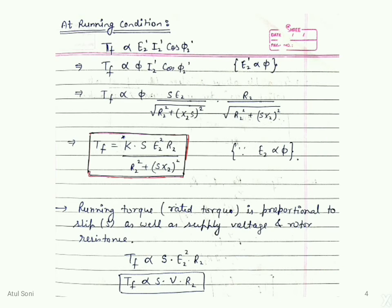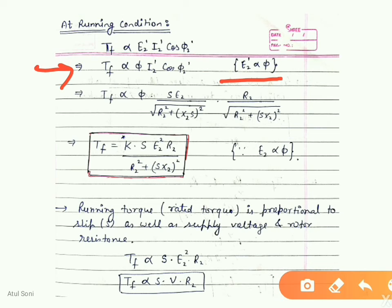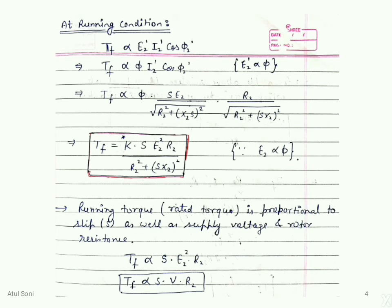After solving, the full load torque Tf is directly proportional to φ · I2' · cos φ2'. Since EMF is proportional to flux, substituting the current I2' = sE2 / √(R2² + (sX2)²) and power factor cos φ2' = R2 / √(R2² + (sX2)²), and replacing the proportionality constant with K, we get that the running torque is proportional to slip, supply voltage, and rotor resistance. The full load torque is proportional to s · E2² · R2.